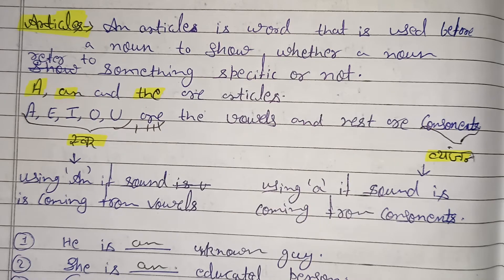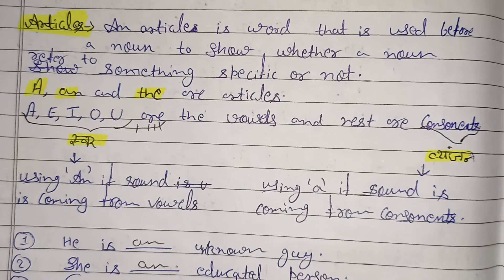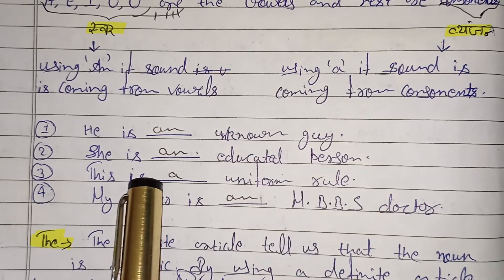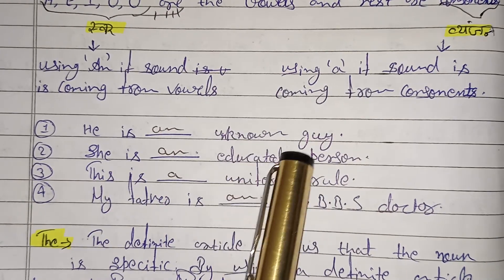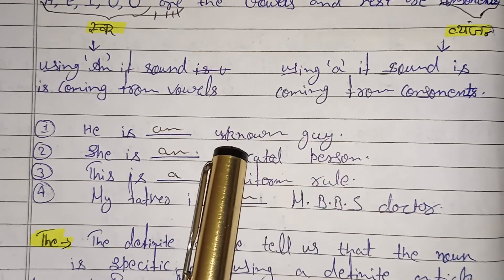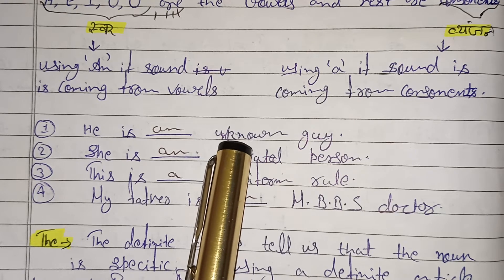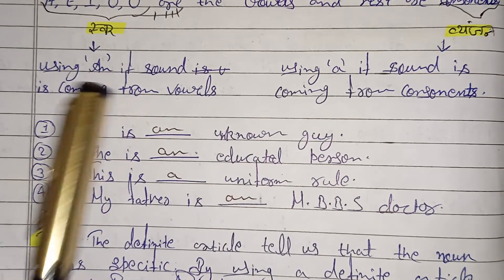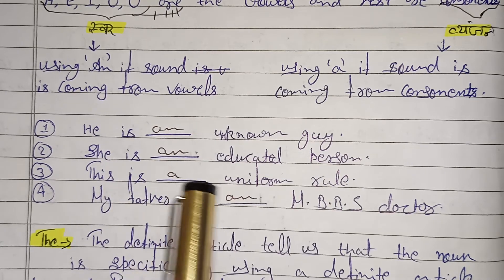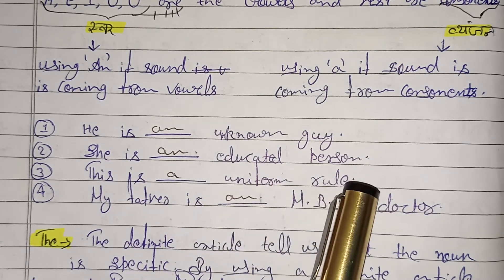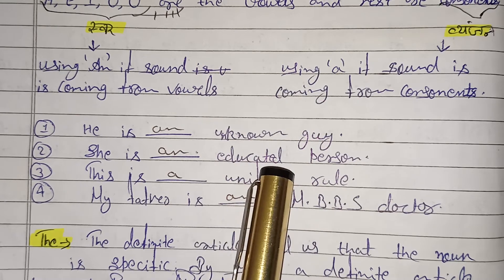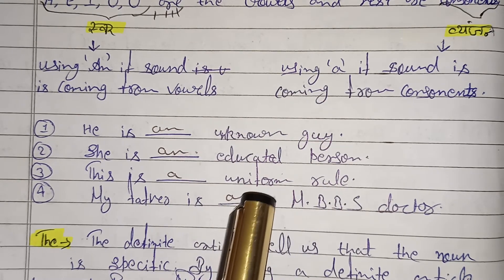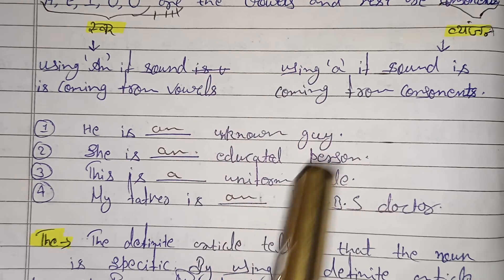We will show a name. Let's see for example. He is an unknown guy — unknown means 'A'. She is an educated person — it will be 'AN'.